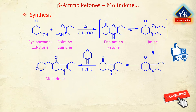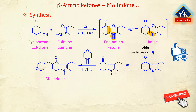Molindone is synthesized by the condensation of cyclohexane-1,3-dione with an oxyminoketone, which is obtained from nitrosation of 3-pentanone in the presence of zinc and acetic acid solution, forming an unstable intermediate enaminoketone which isomerizes to an imine. Conjugate addition of the amine to cyclohexane-1,3-dione followed by elimination of hydroxide as water gives the enaminoketone, which tautomerizes to the imine at equilibrium. Aldol condensation of the side-chain carbonyl group with the doubly activated ring methylene group results in cyclization of the pyrrole ring. A Mannich reaction of the indole with morpholine and formaldehyde yields the desired compound, molindone.